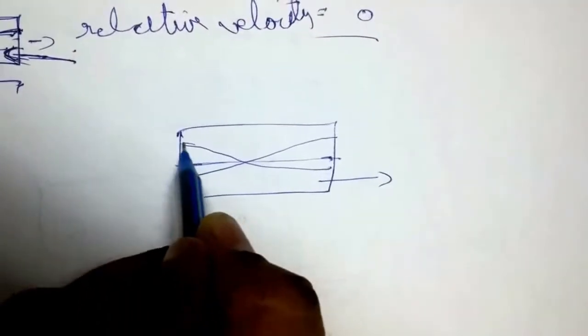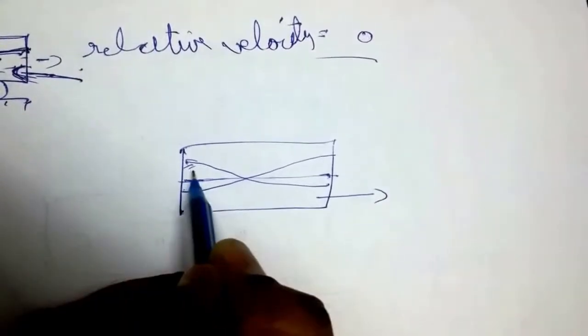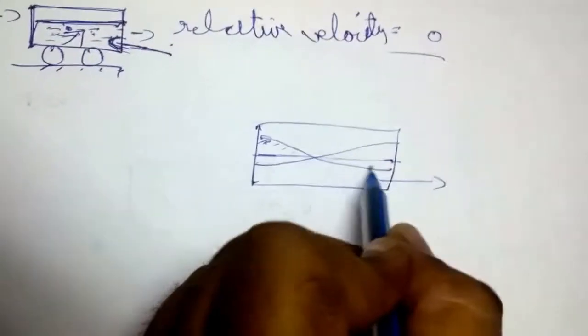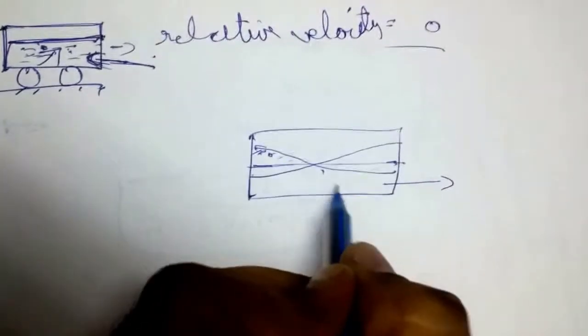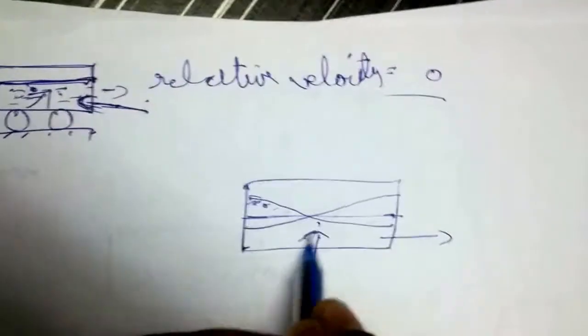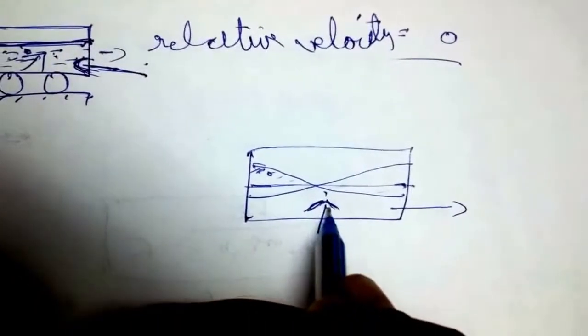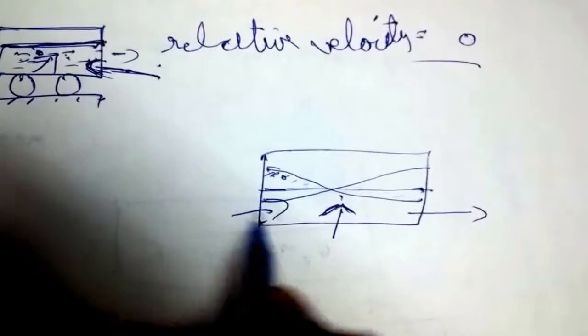So you can say that the relative velocity between particles is not zero. That is, all the particles of the water are not undergoing the same acceleration or same velocity because of their fluidity.